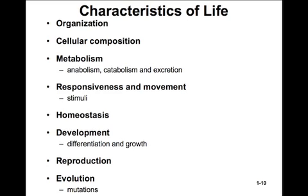Reproduction is immensely important for a living organism — without it, genes cannot be passed onto offspring. Finally, all living things are capable of evolution. All living species exhibit genetic change from generation to generation because mutations in DNA are inevitable, and because environmental selection pressures endow some individuals with greater reproductive success than others. That brings us to the end of the first section of Chapter 1. We'll see you shortly for the next section, where we'll look at homeostasis and negative feedback.